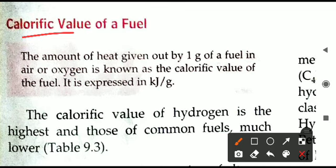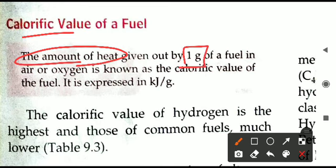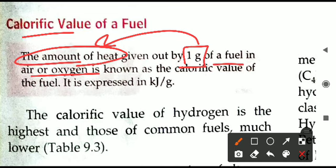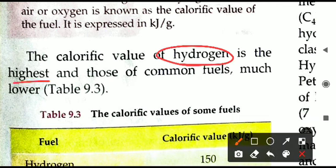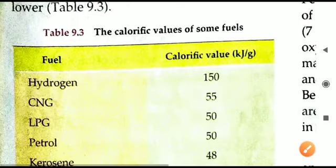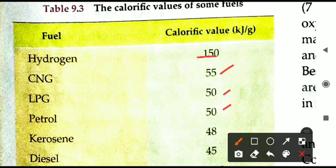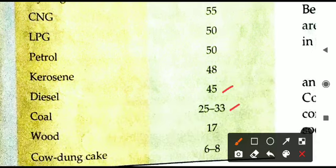After the definition, we move to calorific value. We burn fuel to get heat energy or light energy. The amount of heat energy given out by burning one gram of fuel in air or oxygen is called calorific value. More heat energy means more calorific value; less heat energy means less calorific value. The unit is kilojoules per gram. The calorific value of hydrogen is the highest among all fuels.